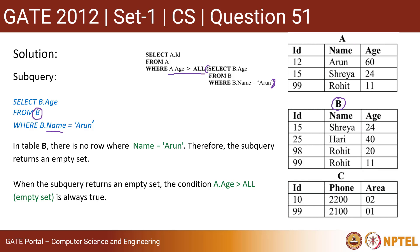What will be this part, the condition part? The condition will be A.Age greater than ALL empty set, which is always a true condition, which will always be considered as a true condition.